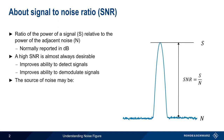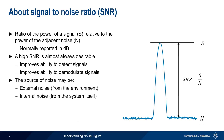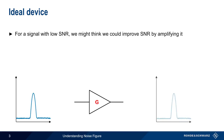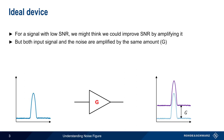Noise can come from two types of sources. It may be external to the system, that is, noise from the environment, but noise also can be introduced by the system itself, or by its components. Although the output signal level would be increased by the gain of the amplifier G, even an ideal amplifier would still amplify both the signal and the noise by the same amount.